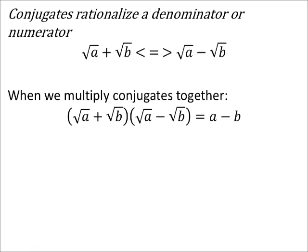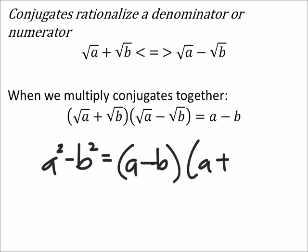A conjugate is a way that we can rationalize denominators. It specifically has to do a lot with square roots, because if we look at this, the difference of squares, right.